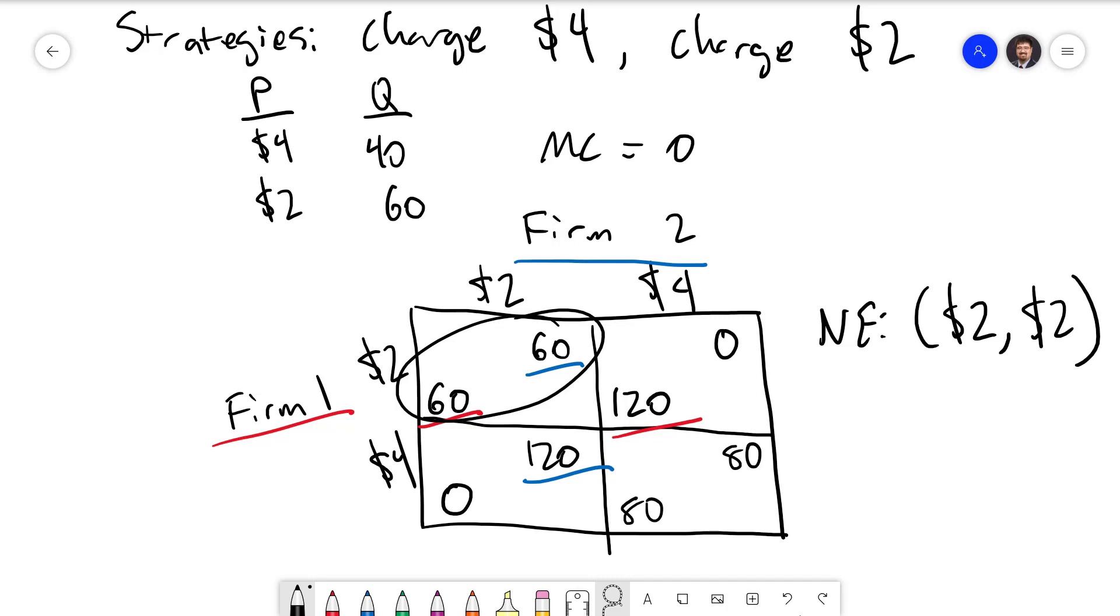Each firm understands that what they do affects the other firm and what the other firm does affects them. This is essentially a simplified version of the Bertrand model of oligopoly, which we will talk about in greater detail later on.